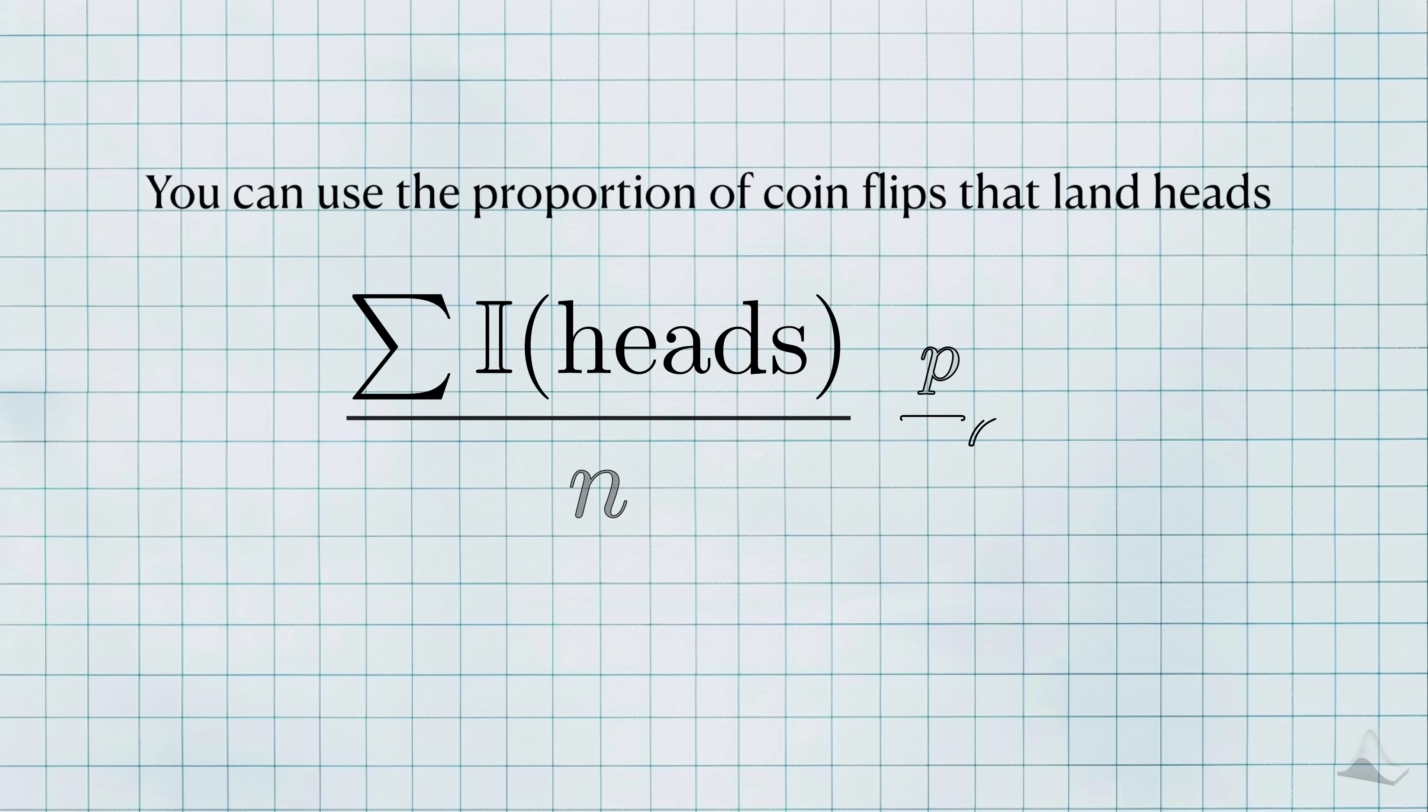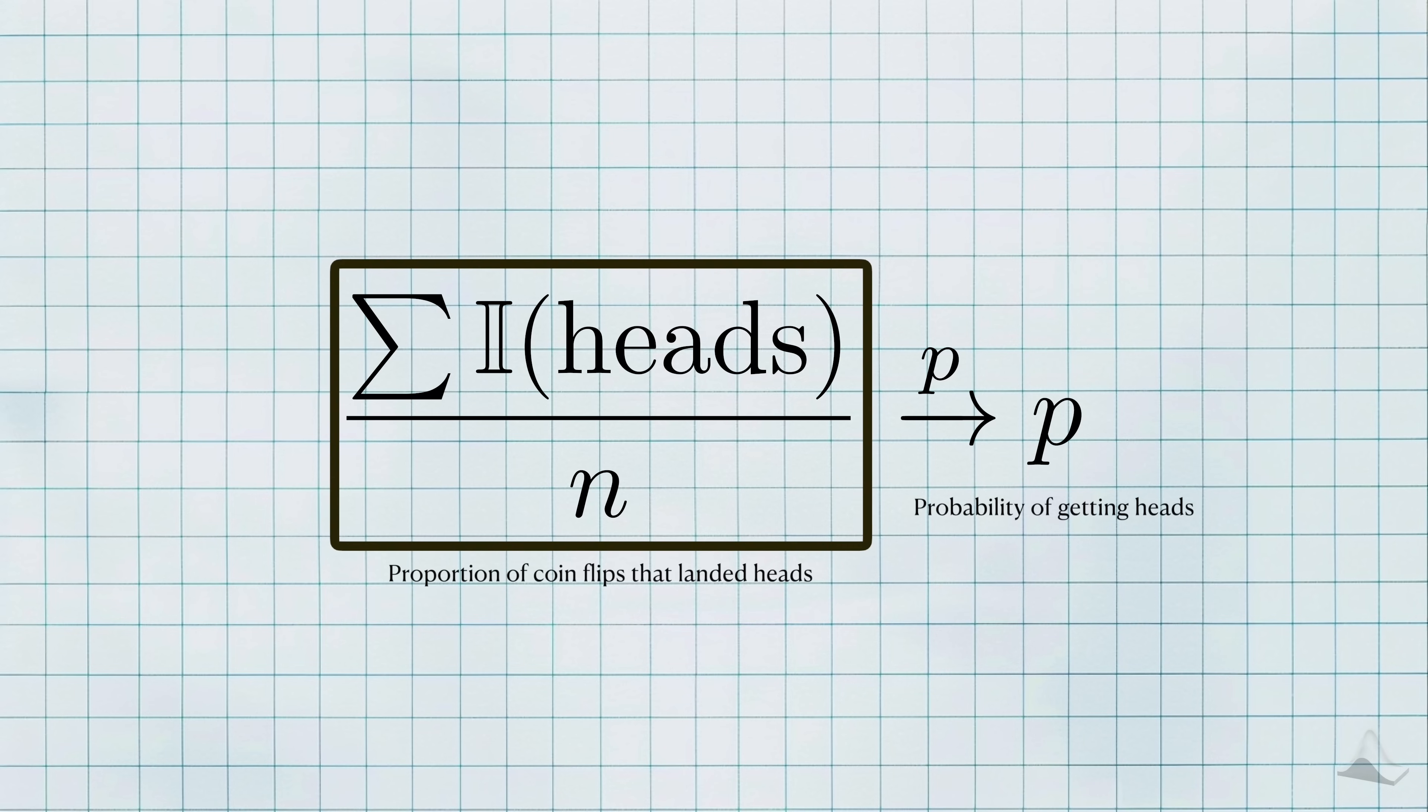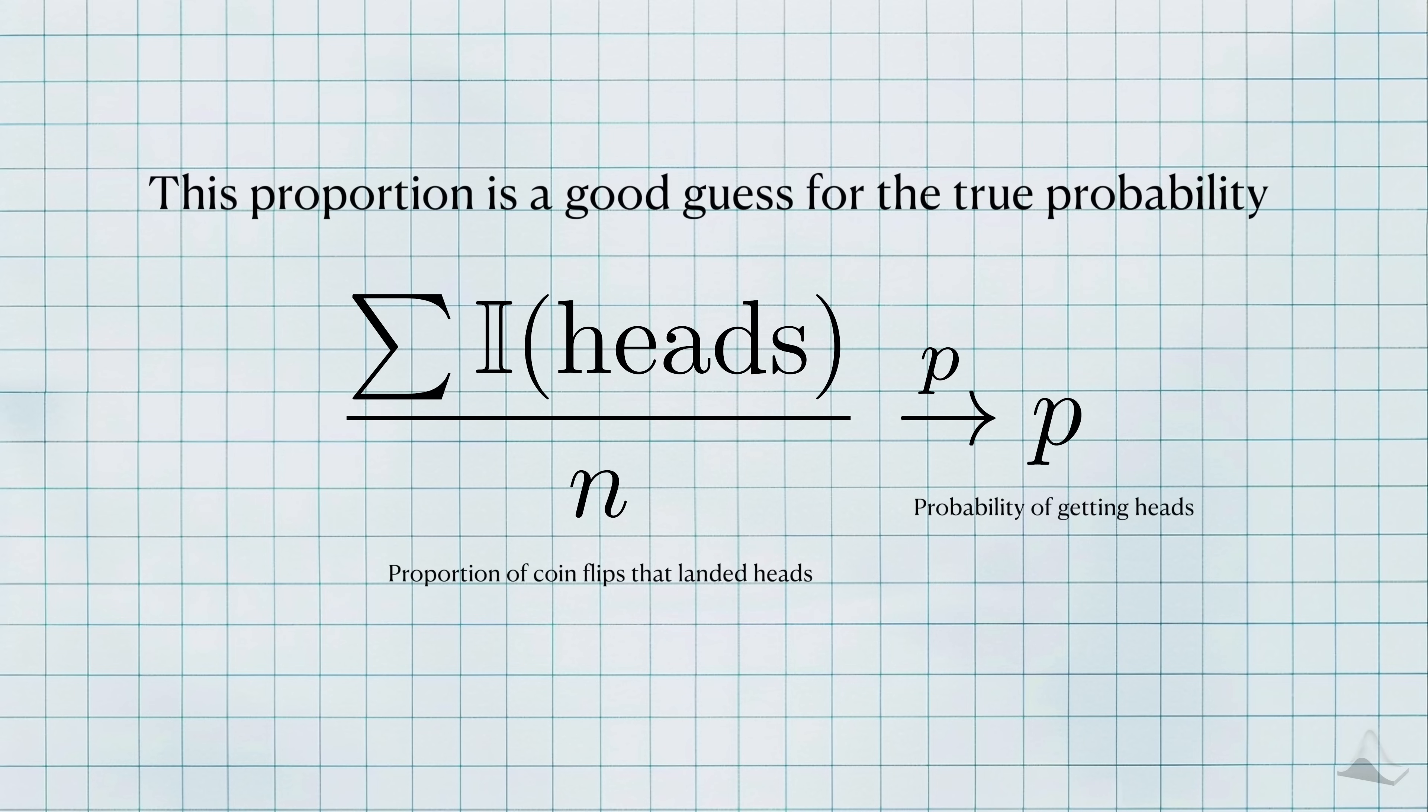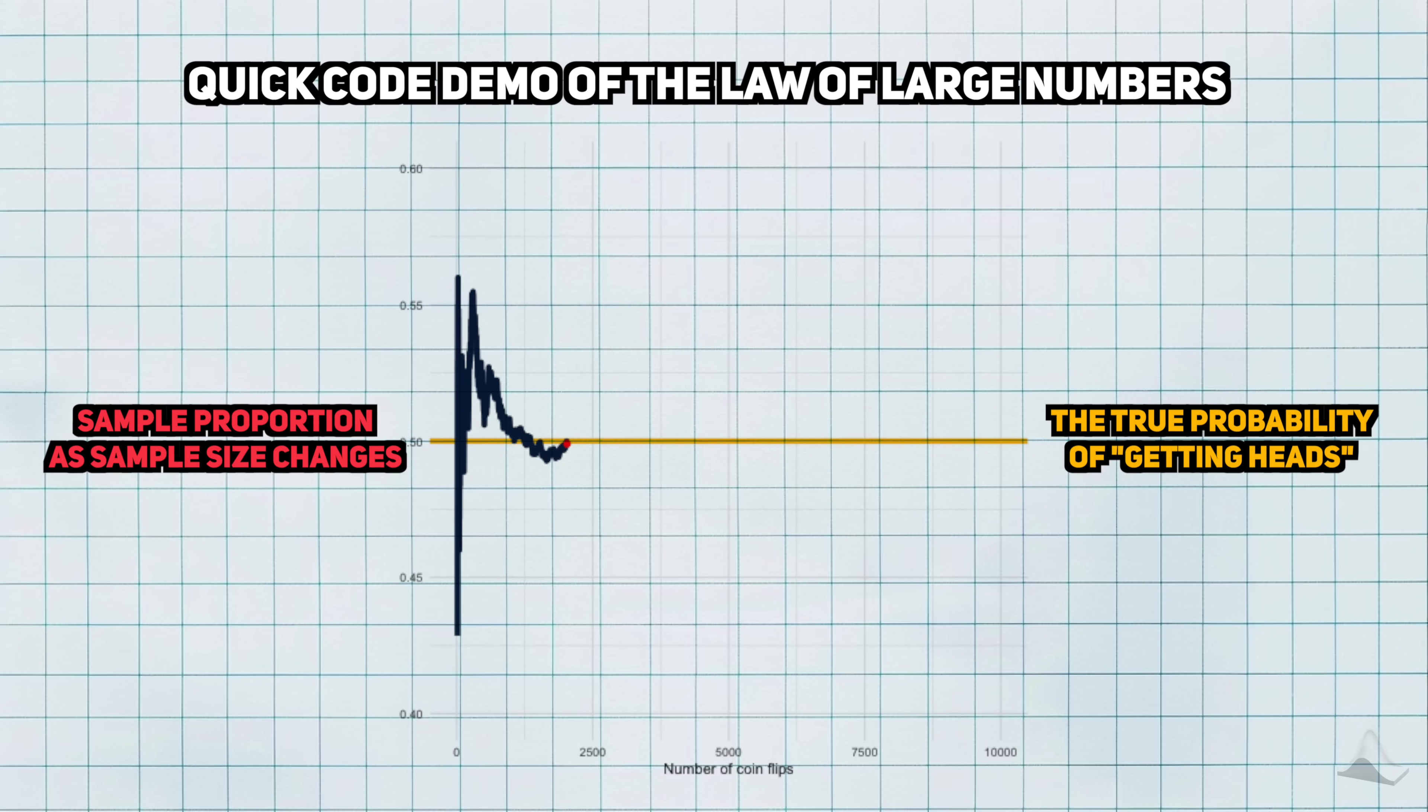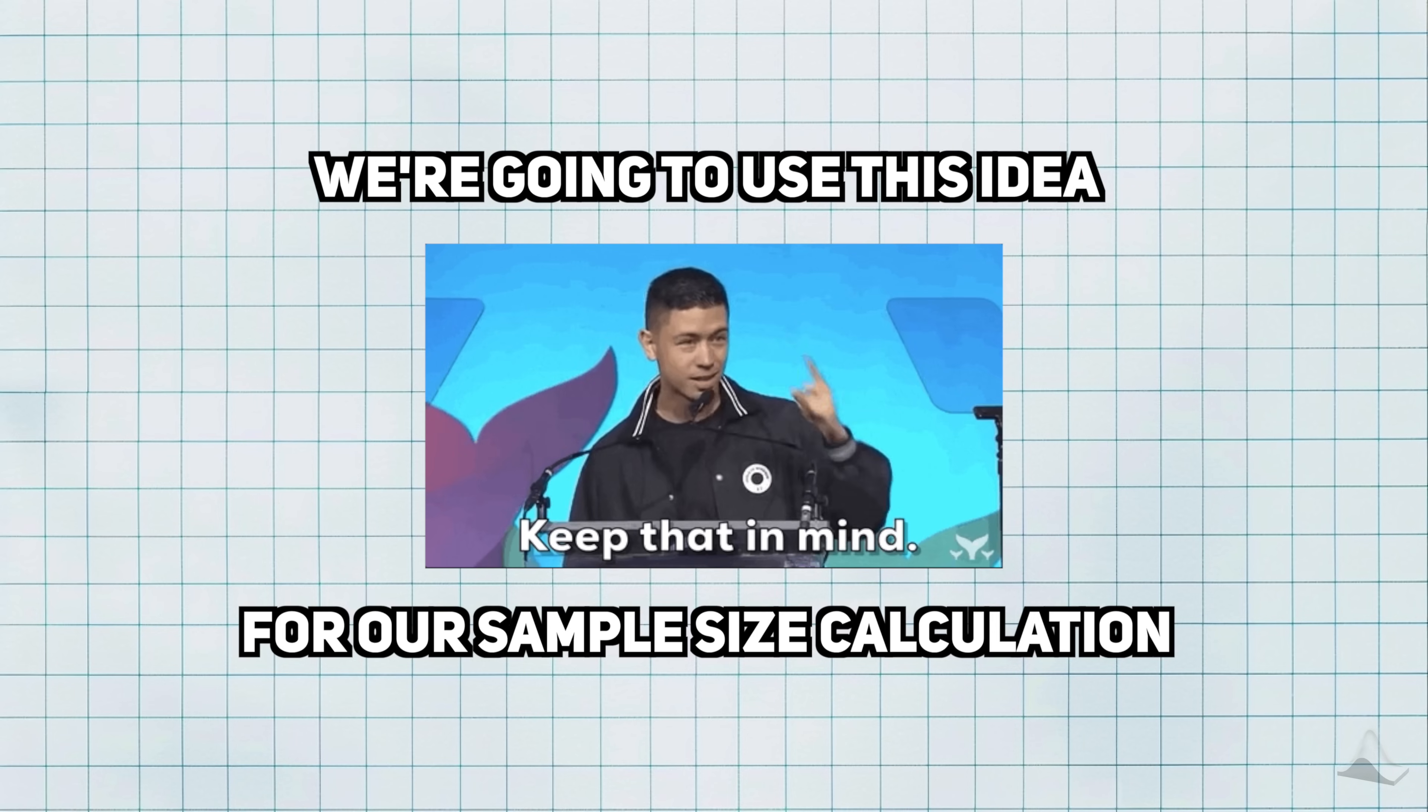Most of us will be familiar with the idea that you can use coin flips to estimate the probability of getting heads. We can calculate the sample proportion of flips that ended up heads, and this proportion will be a good estimate for the true probability of getting heads. The law of large numbers tells us that, with more and more data, the sample proportion will be close to the true probability. We're going to hijack this intuition for our sample size calculation.